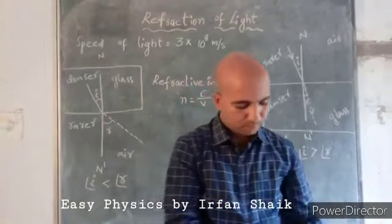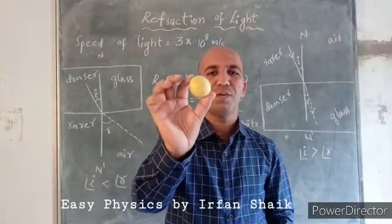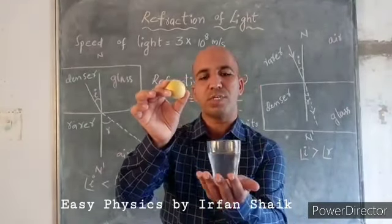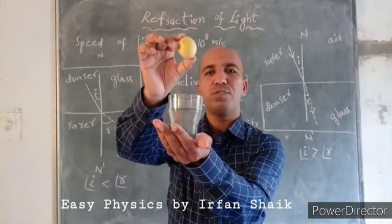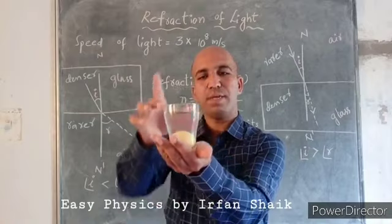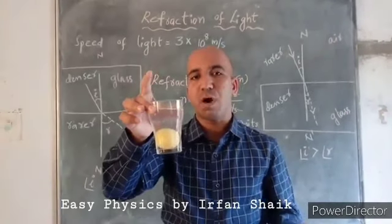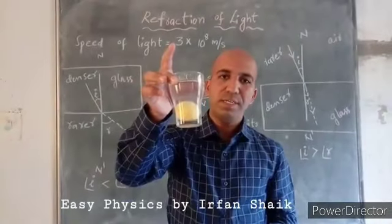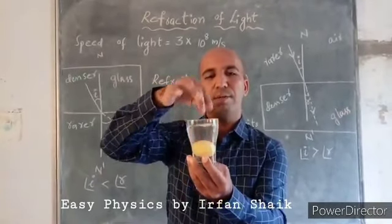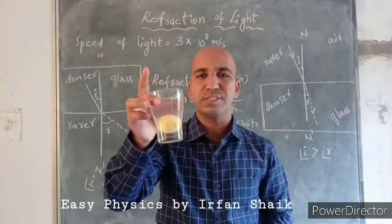Let us take one more example. Here, I have a lemon. Observe the size of the lemon now. When this lemon is placed inside the water, observe its size — it looks bigger than its original size. This is also because of refraction. In this class, we are going to discuss why this is happening: why some objects look bigger than their original size and why light bends.